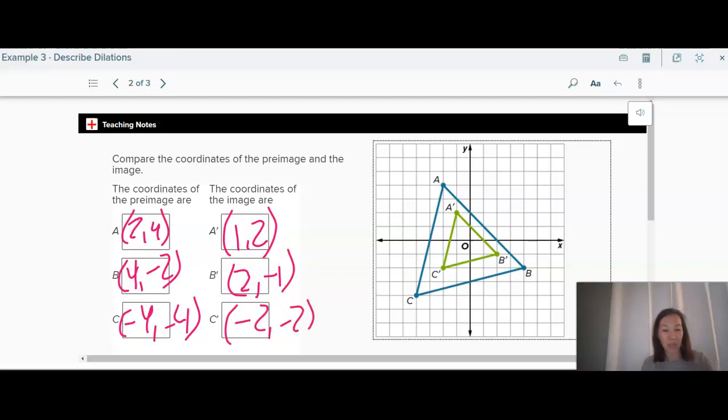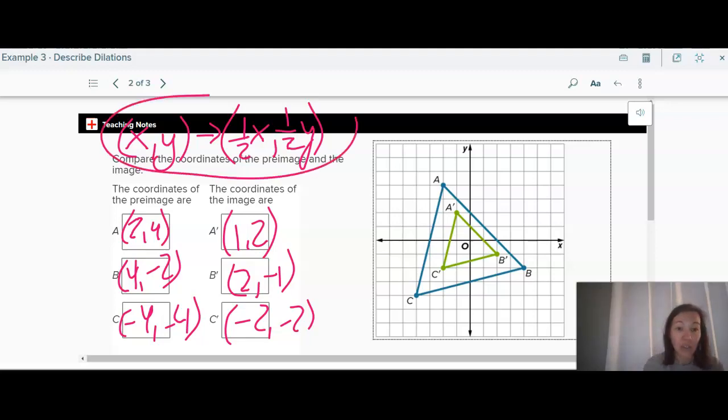So what happens to each of these points from here to here? Well, the original is x, y. And what are we multiplying this by to get this? Well, it's really half. Each of these is half of this, right? So we're multiplying x by 1 half and y by 1 half. These numbers in front should be exactly the same. So the scale factor is the same for x and y. So our coordinate notation then is just this. So this is how you would write a dilation in coordinate notation. x, y arrow, and then whatever the scale factor is times x, y.